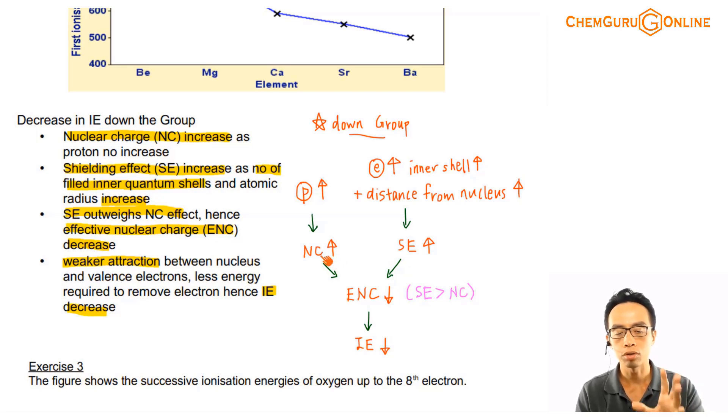Increase in nuclear charge will cause a stronger attraction on the valence electron, will cause the IE to go up. Increase in shielding effect, and increase in the distance from the nucleus, will result in a weaker attraction on the valence electron, so it'll cause the IE to go down.